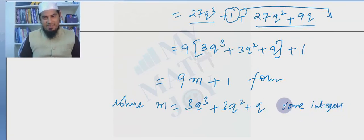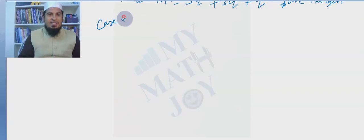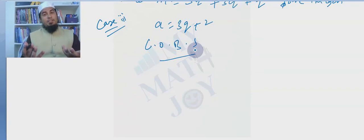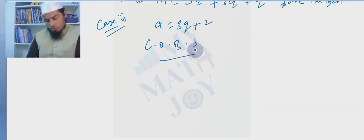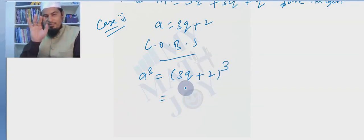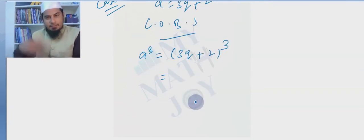Case 3: a = 3q+2. Cubing both sides. Please pause this video, expand (3q+2)³ yourself using the (a+b)³ formula, then check your answer against mine.